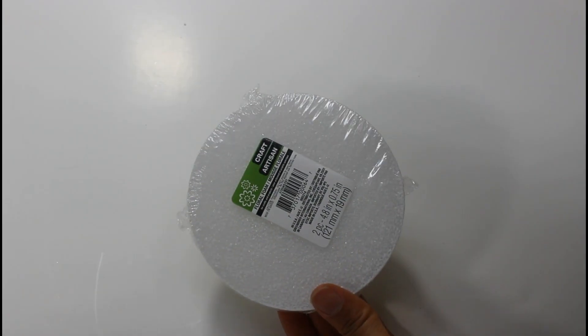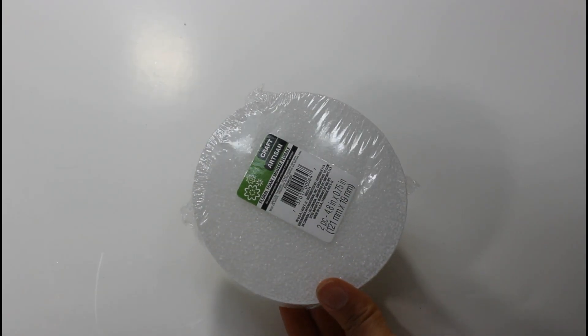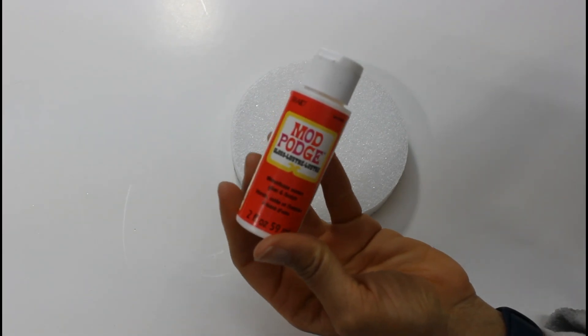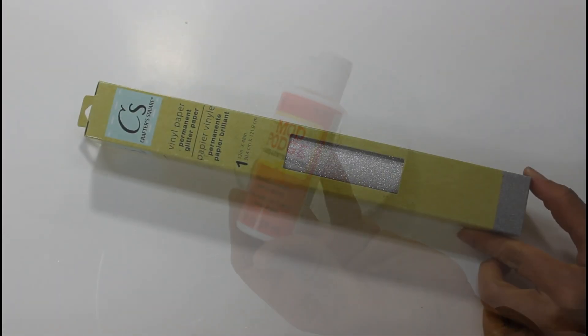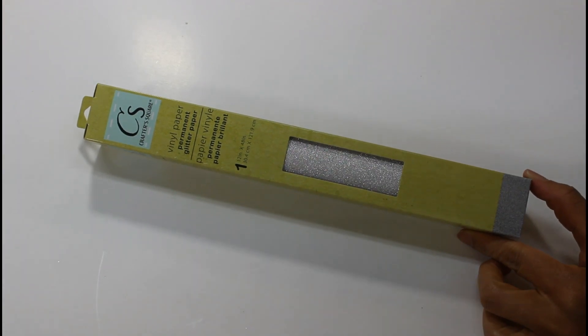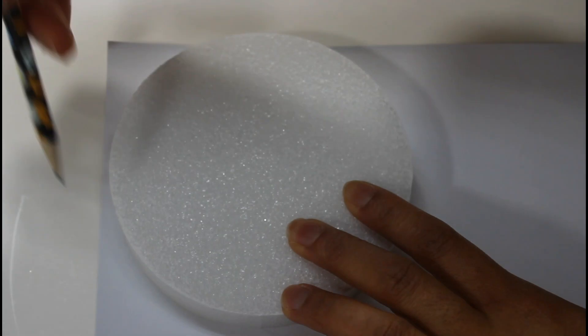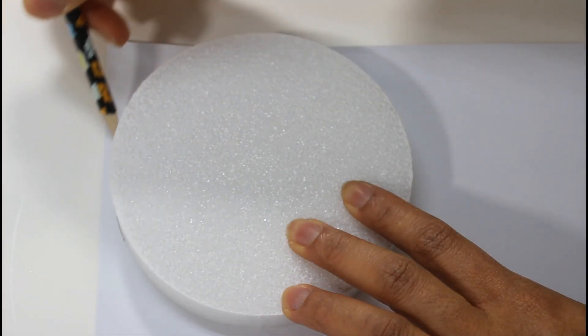I'll be going in with round floral foam and it's from the Dollar Tree. You'll also need mod podge and you can find that at Dollar Tree as well. And you'll also need this vinyl craft paper from Dollar Tree. Here you see me tracing out a circle in the shape of my floral foam.